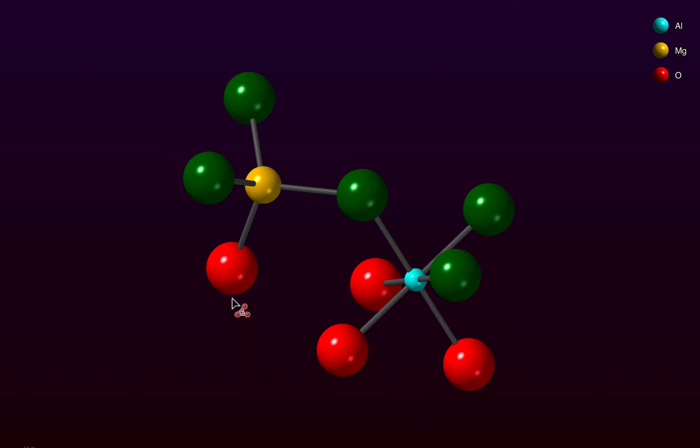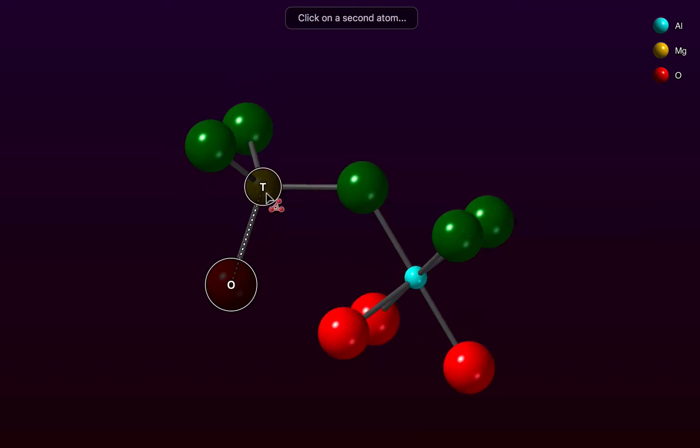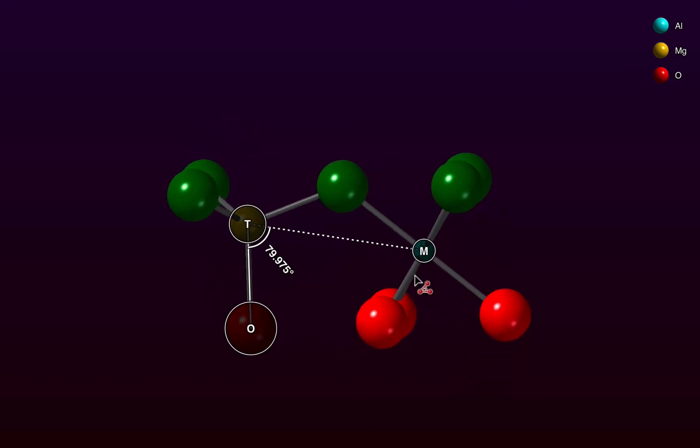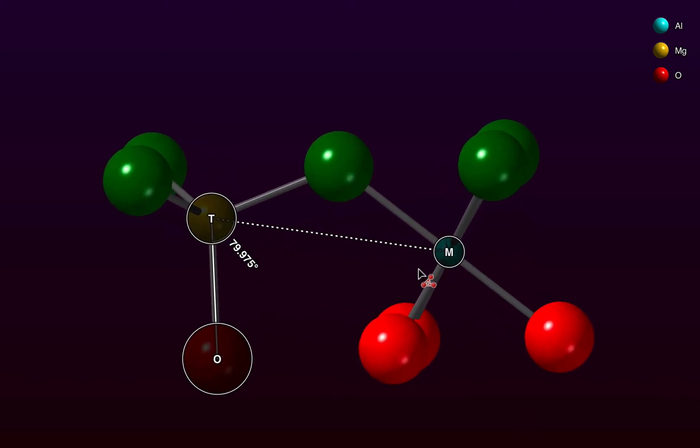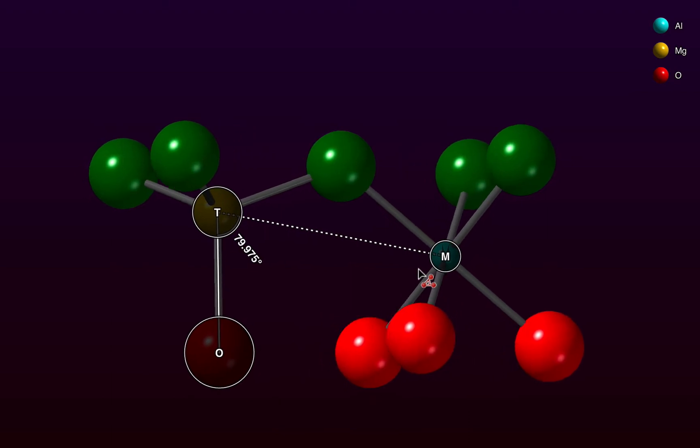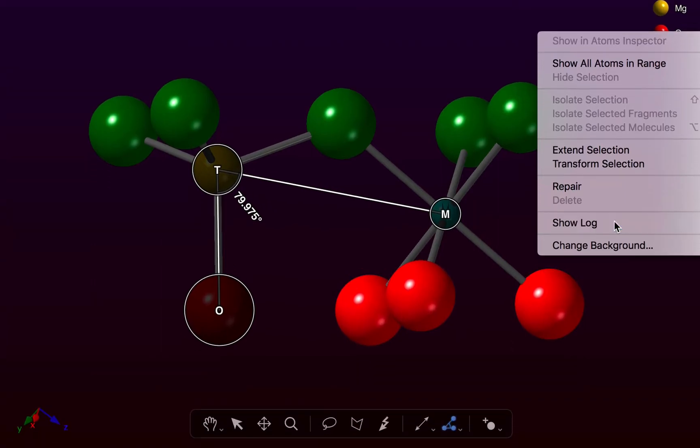You can also use this to anchor a measurement, and then you can roll over and measure the included angle between the two anchored atoms and a third atom in the structure. And again, you can rotate and scale the model during the course of your measurement. Click the third time to anchor the measurement, and then information about that bond angle measurement is displayed in the window log.